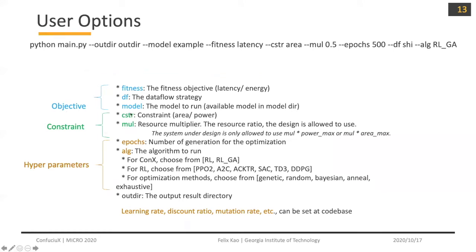Here are user options for input arguments, categorized into objective, constraint, and hyperparameter. The objective includes latency and energy. For dataflow and model, you can choose from the supported options in the corresponding directories. The constraint is the resource constraint — area or power. The multiplier is the resource constraint multiplier: when dataflow and model are fixed, you can calculate the maximum power and area you could have if all actions are the largest PE and buffer. The constraint is then posed as: the system is only allowed to use multiplier times power-max or multiplier times area-max. Hyperparameters include epoch and algorithm choice, as well as learning rate, discount ratio, and mutation ratio.